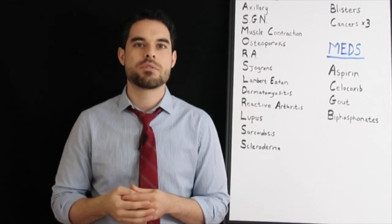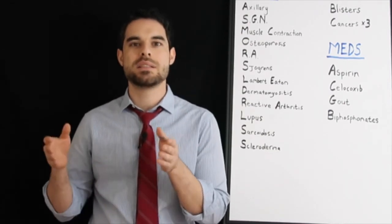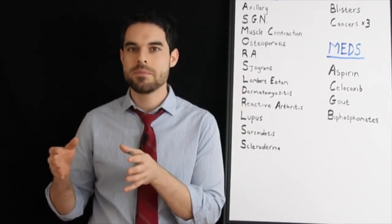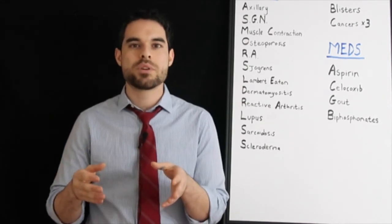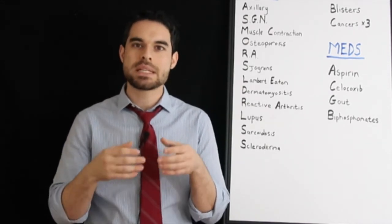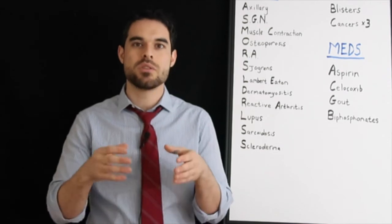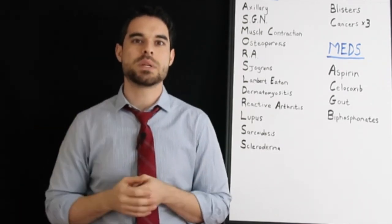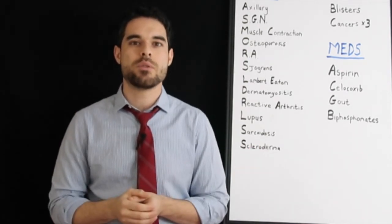And also with allopurinol, remember that because it's a xanthine oxidase inhibitor, 6-mercaptopurine and azathioprine, which are normally metabolized by xanthine oxidase, those metabolites are going to stay at high levels because if you inhibit xanthine oxidase, they won't be metabolized.